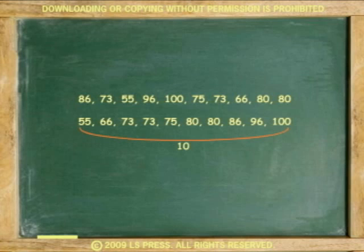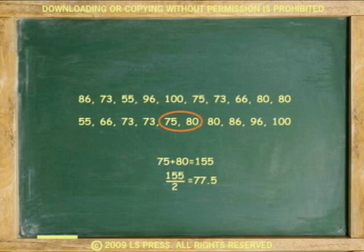Number of observations, 10. The closest numbers to the center are 75 and 80. Add both and divide by two. Answer, 77.5.